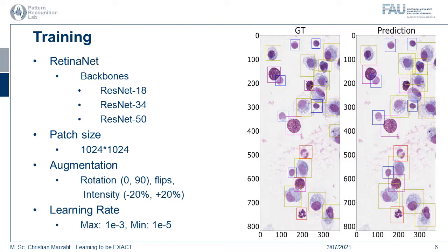Let's dive a little bit more into the training pipeline. We use a RetinaNet implementation for detecting cells with different backbones, and a patch size of 1024 by 1024. This patch size is motivated by our cell structure, because we have some very small cells at 50 by 50 pixels and some quite large cells at a couple of hundred by hundred pixels. To find a patch size which covers both, we have to take this very large one. We use standard augmentation techniques and a learning rate schedule as mentioned at the bottom of the slide. Here we see our ground truth and the predictions, which show quite good results.